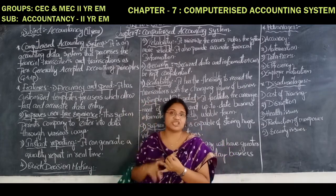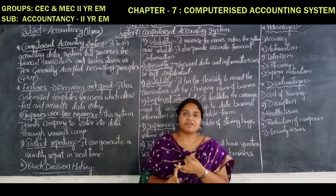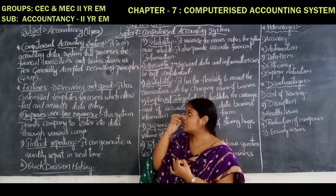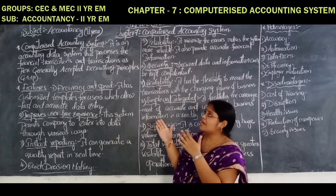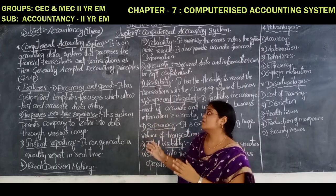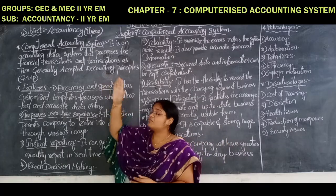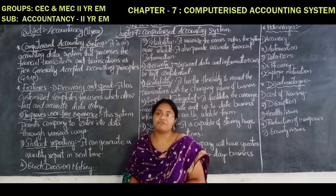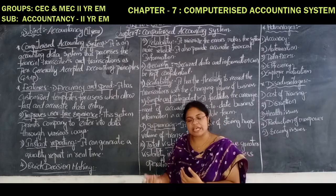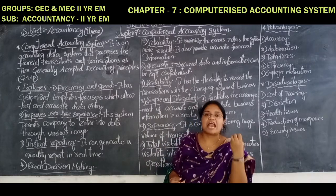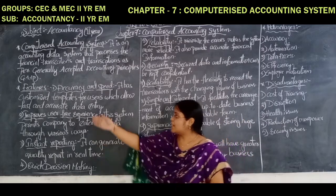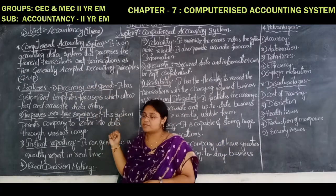Accounting conventions include prudency, materiality, conservatism, and disclosure — these all are the conventions. So they will have generally accepted accounting principles — those are accounting conventions and accounting concepts. With the help of this computerized accounting system, we can do our accounting very fast and with speed, and those accounts are accurate and correct. Let us see some of the features of the computerized accounting system. The first feature is accuracy and speed.